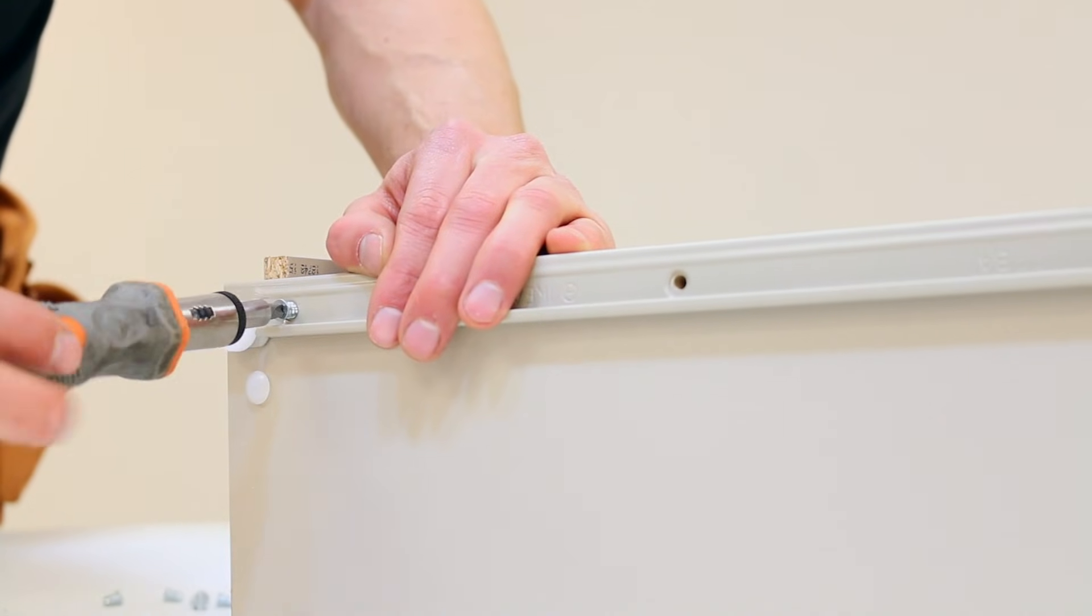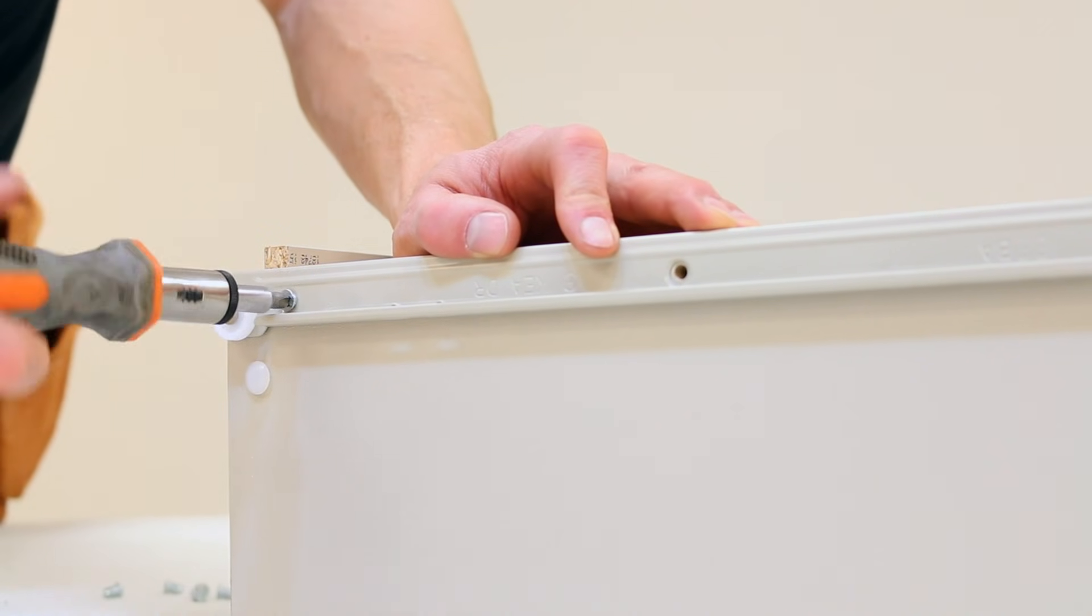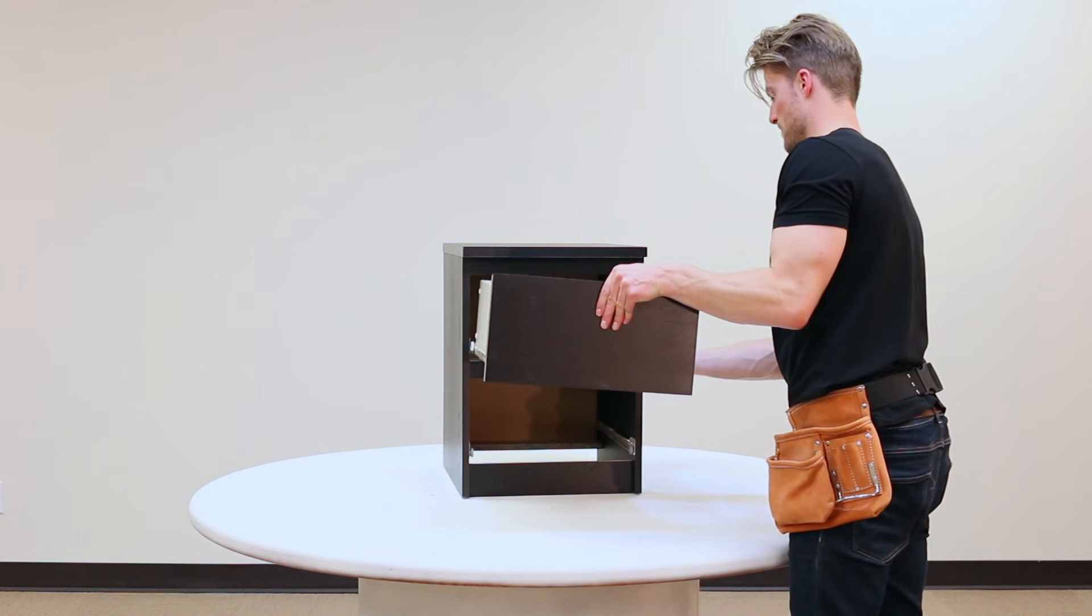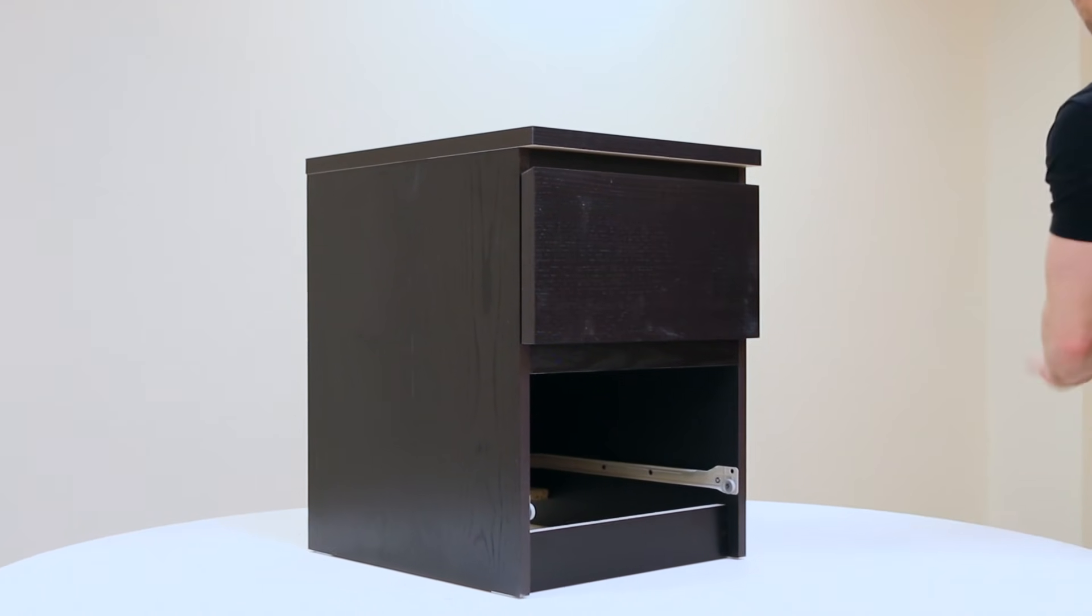Finally, take the rails for each side of the drawer and insert three screws to complete the drawer. Repeat this process for the second drawer and slide the drawers into place. See you next time.